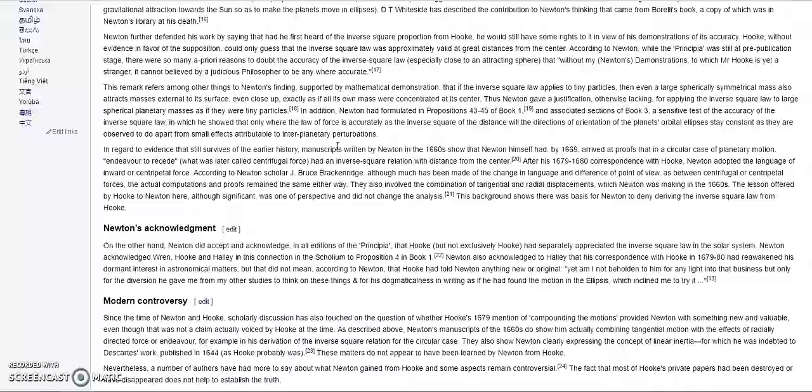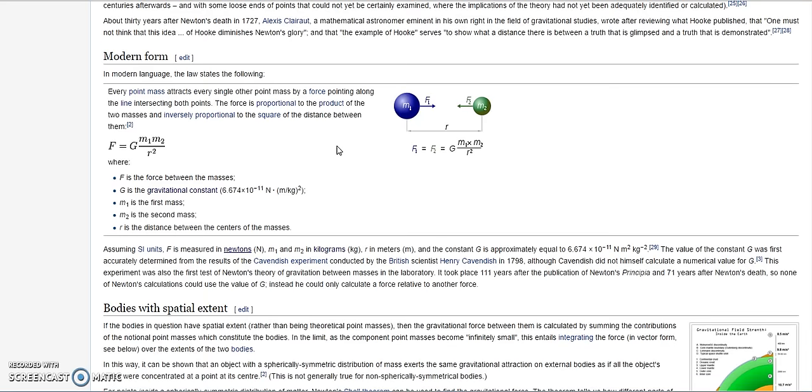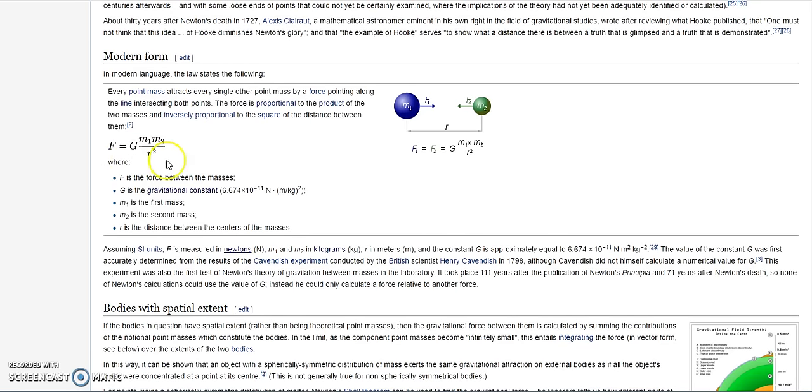So if we look at the equation, F is the force between the masses. Again, this is the force. So already we're starting off with some scientism here, it's like Star Wars, the force. G is the gravitational constant. M1, mass, M2, mass, R, distance between the centers of the masses.